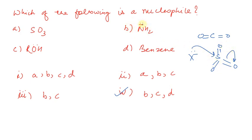NH2⁻ is a nucleophile — it has a negative charge and donates electrons. In ROH, the lone pair is donated, so it is a nucleophile. In Benzene, there is a nucleophilic reaction where the electrophile comes — like Br+ comes. We have electrophilic aromatic substitution reactions, and Benzene acts as a nucleophile. So leaving SO3, options B, C, and D are all nucleophiles.